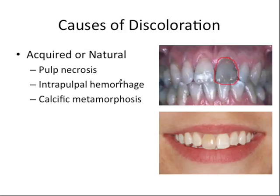Intrapulpal hemorrhage is similar — it can be due to trauma to the tooth which disrupts and ruptures coronal blood vessels. Blood disintegration byproducts like iron sulfides leak into dentinal tubules and cause sort of a tooth bruise, which can appear similar. This can reverse itself if the tooth heals, but otherwise should be bleached internally. Of course, bleaching is entirely elective — it depends on the patient whether this discoloration really bothers them.